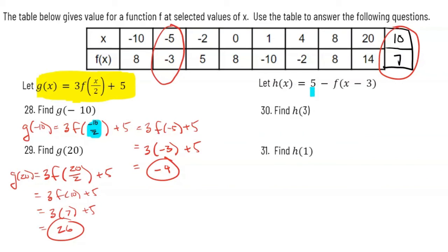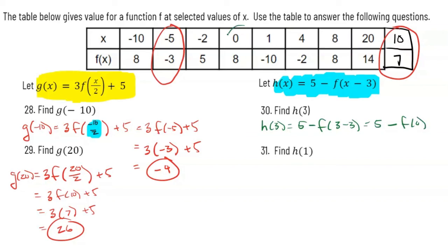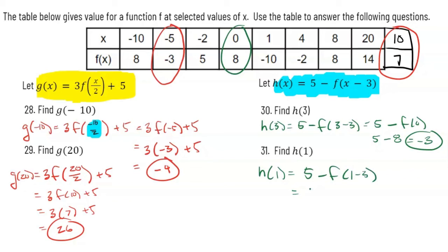Now we have function h, which is also defined based on f with a couple of different transformations. Let's find h(3). All we have to do is substitute in three for x. So we have 5 - f(3 - 3) = 5 - f(0). Looking up f(0) in the chart, f(0) = 8. So 5 - 8 = -3 for the final answer. Now h(1): it's gonna be 5 - f(1 - 3) = 5 - f(-2). From the chart, f(-2) = 5. So we get 5 - 5 = 0. Just take your time and focus on making the substitutions.